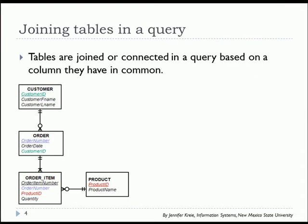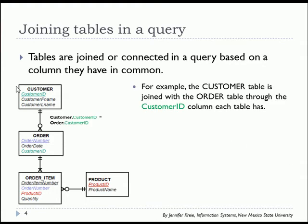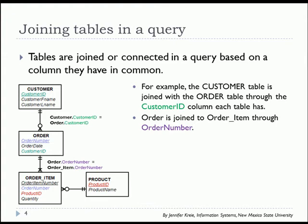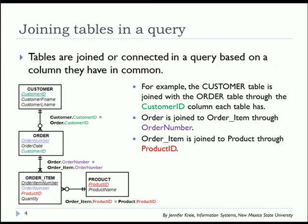Tables are joined or connected based on a column they have in common. This is your primary key to foreign key relationship in most cases. Customer table is joined to order table through customer ID. Customer ID is primary key here, foreign key in the order table. The order table is joined to order item through order number. Order item is joined to product through product ID.